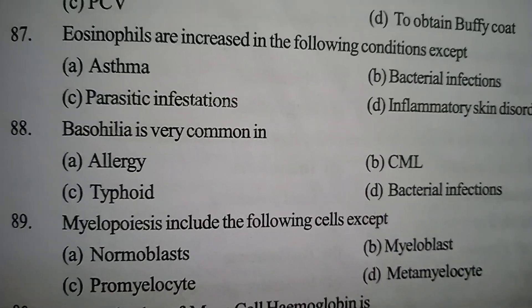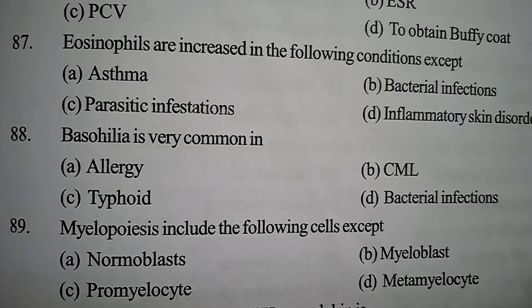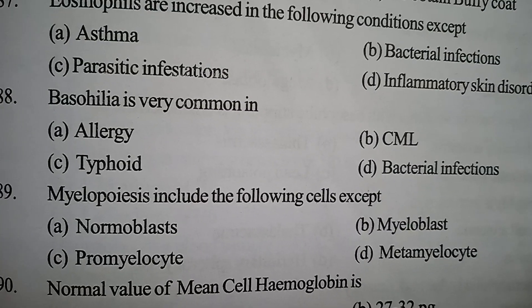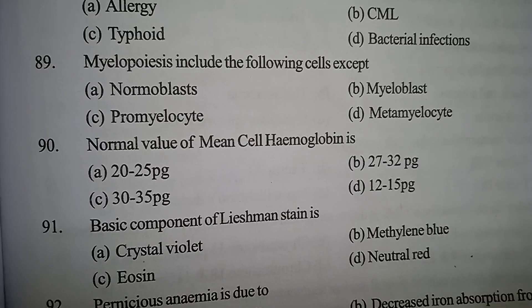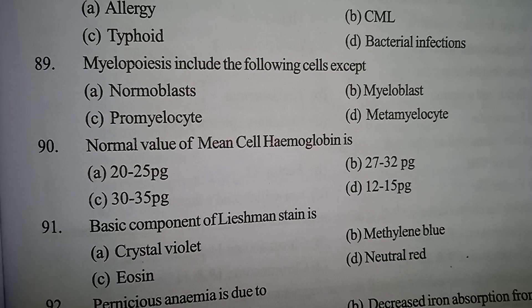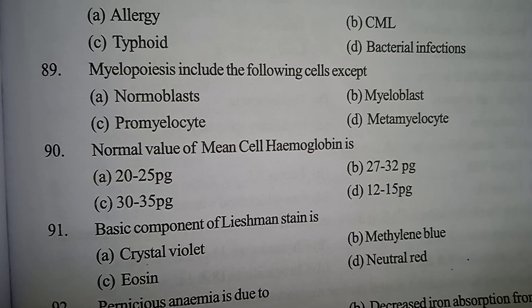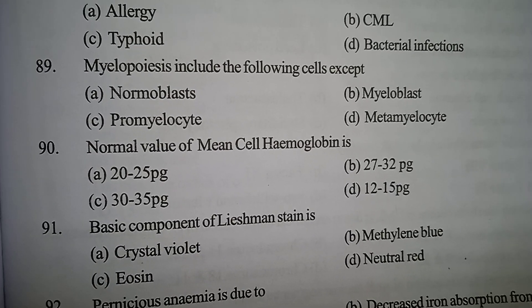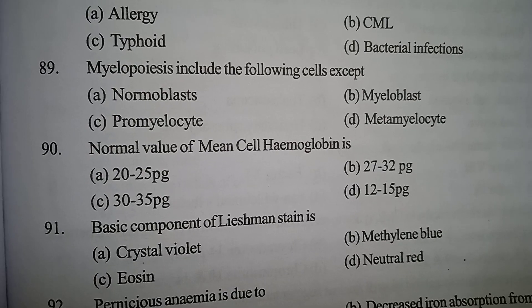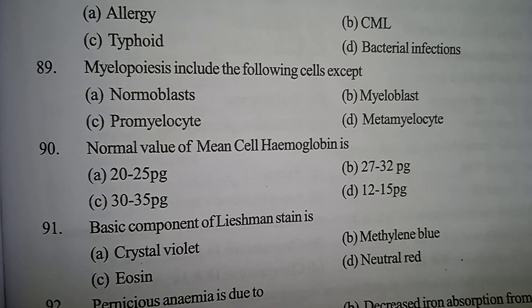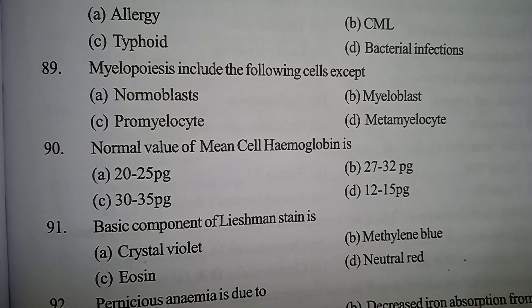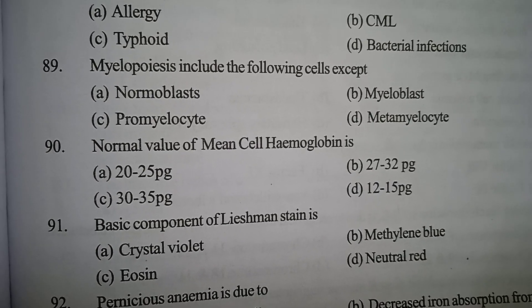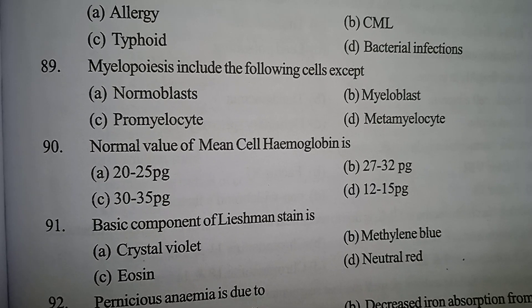Next one: myeloid series includes the following cells except — Option A: normoblast. Option B: myeloblast. Option C: promyelocyte. Option D: metamyelocyte. Correct answer: Option A, normoblast. Normoblast is not present in the myeloid series.